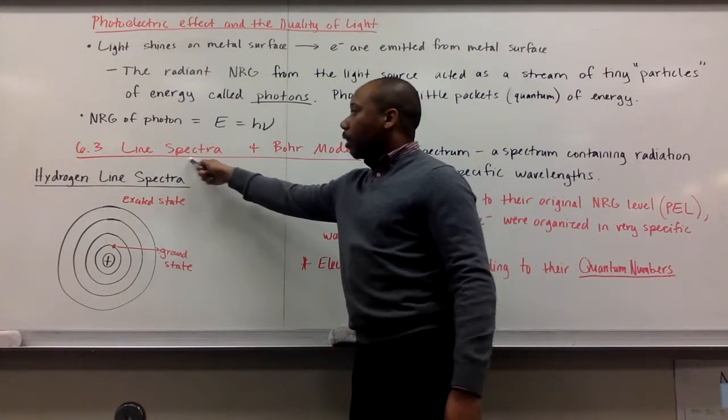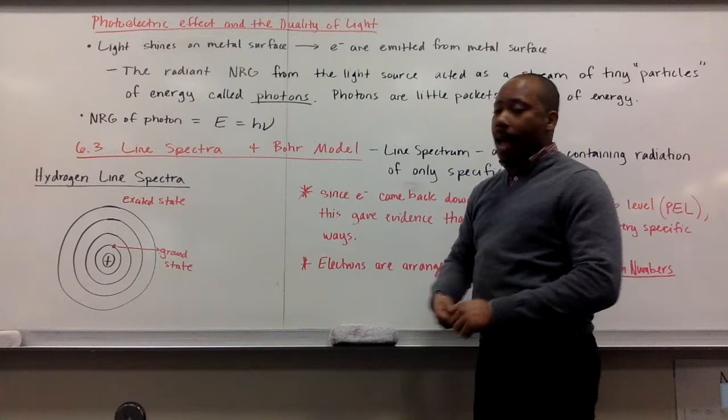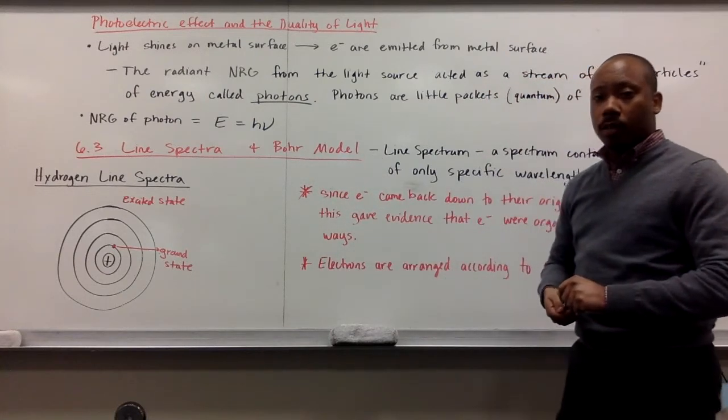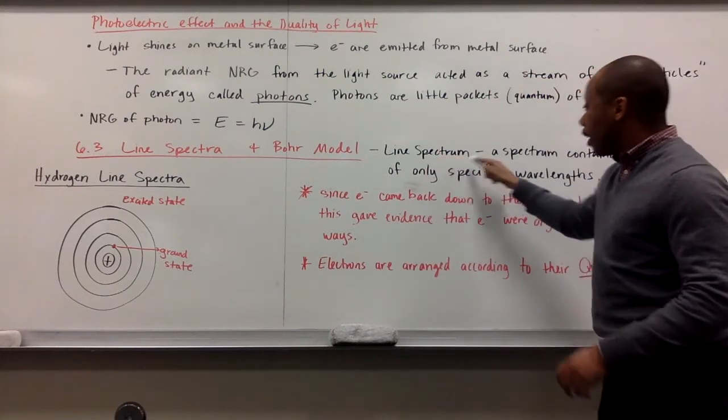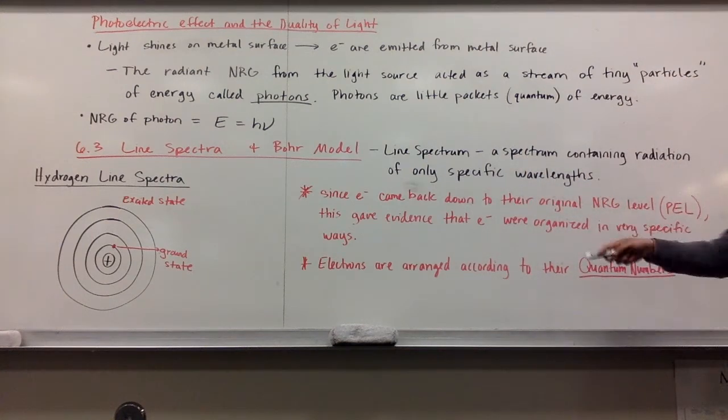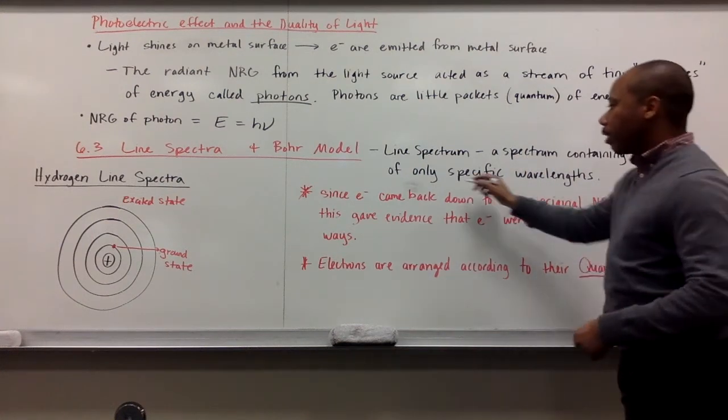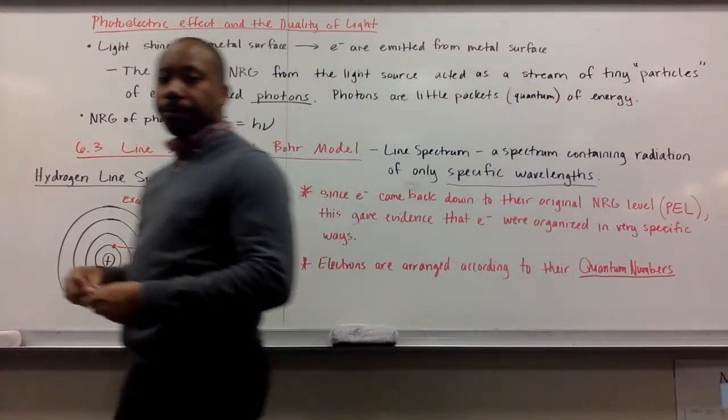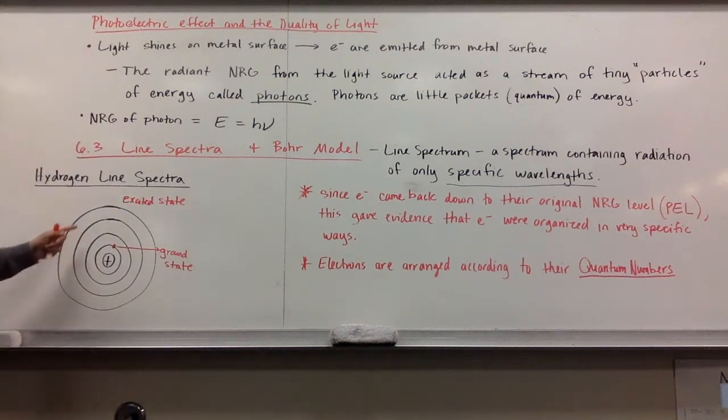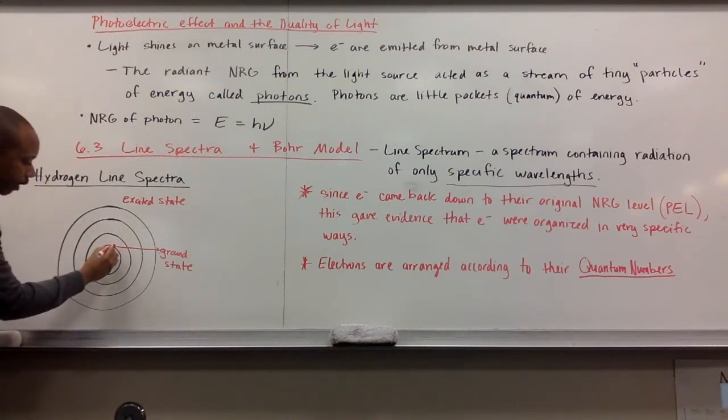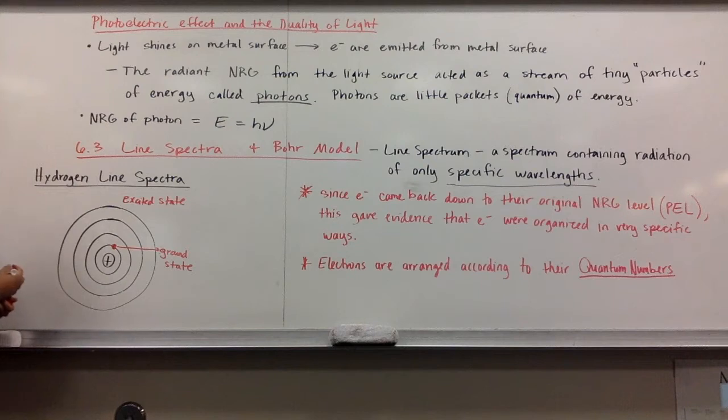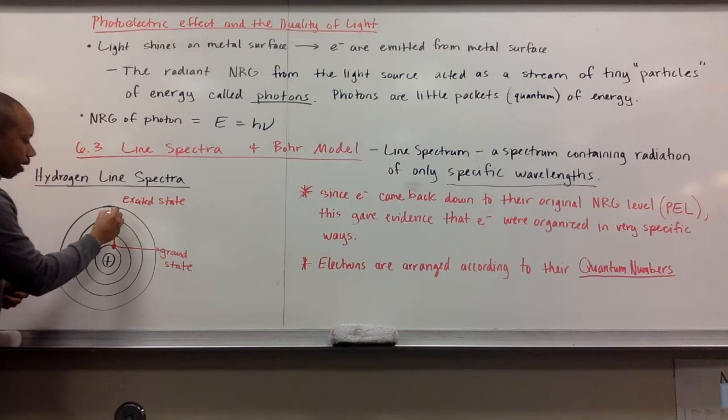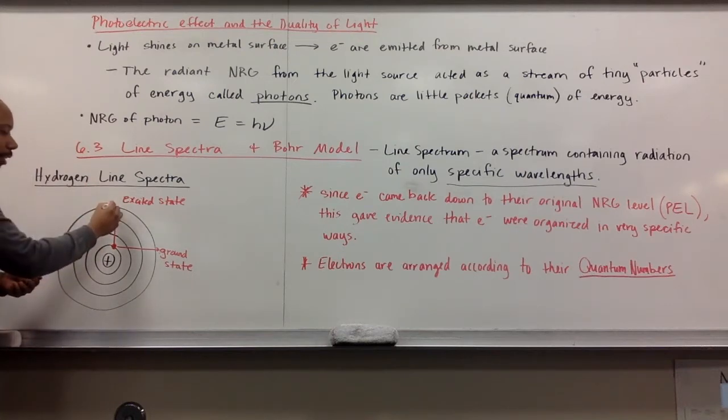He looked at line spectra, and from that we got the Bohr model that he proposed. A line spectrum is a spectrum containing radiation of only specific wavelengths. If we look at hydrogen, our hydrogen line spectrum here - this is a hydrogen atom with its one electron in energy level one. When Bohr put energy into this atom, the atom went to a higher energy level at its excited state.